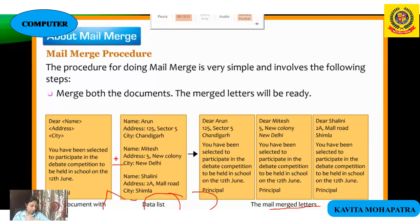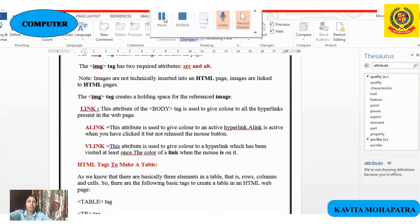Next class I will explain the step-by-step procedure for doing mail merge. Today I explained track changes features and related topics. That's all for today. Now I will explain how you can use thesaurus and track changes features — accepting and rejecting changes and adding comments.